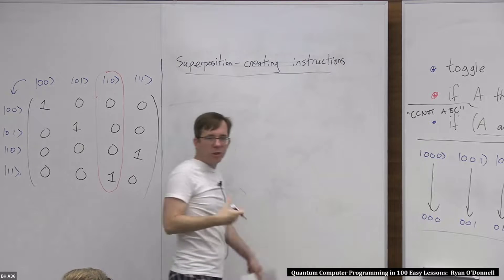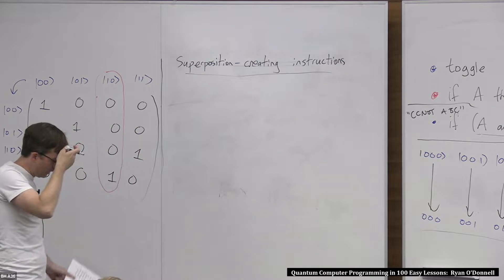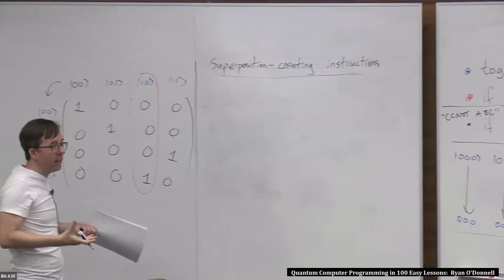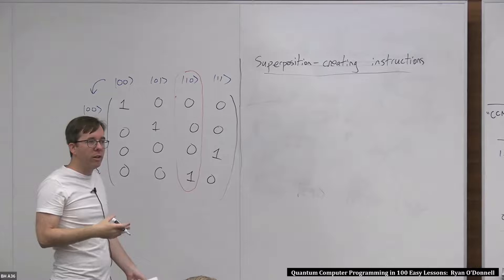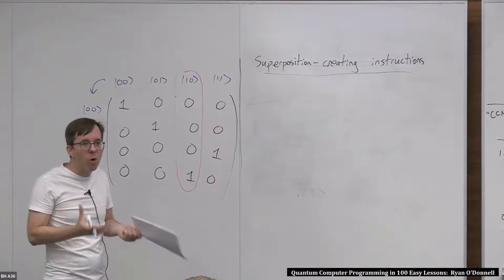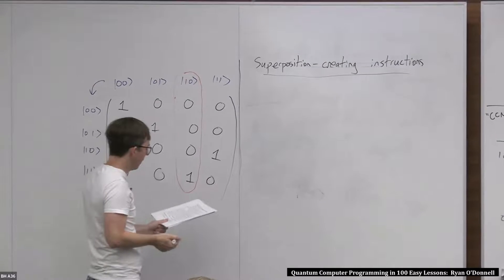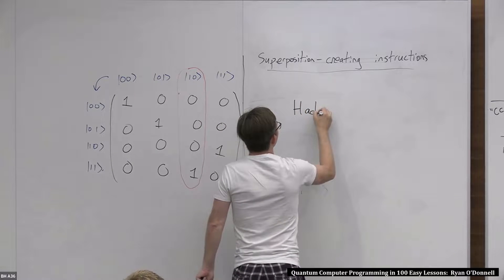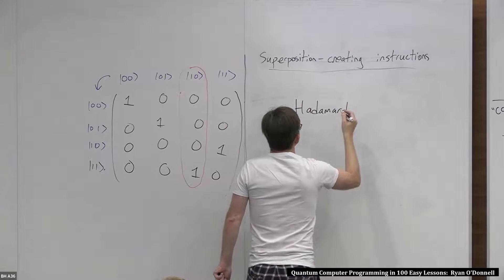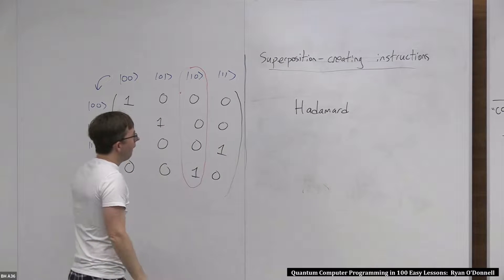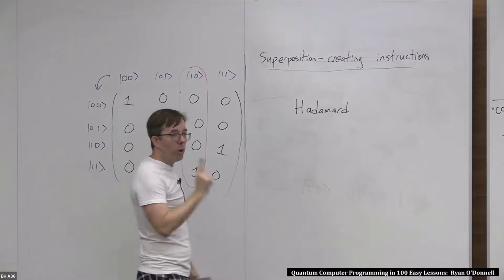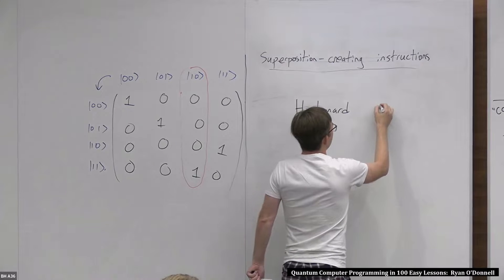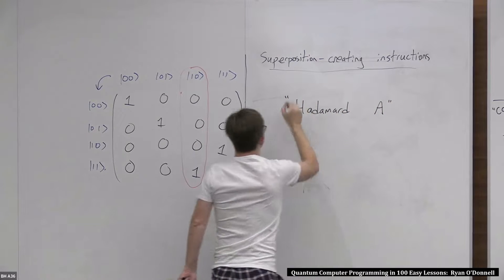These are the ones that really allow you to do the magic of quantum computing. And to be honest, there's really only one — well, you can have any number of them, but you sort of only need one. There's one famous one, and it's the only one you ever need. It's called Hadamard. It's named after a mathematician, and it's a one-qubit instruction — it only operates on one qubit. I'm going to call it qubit A.